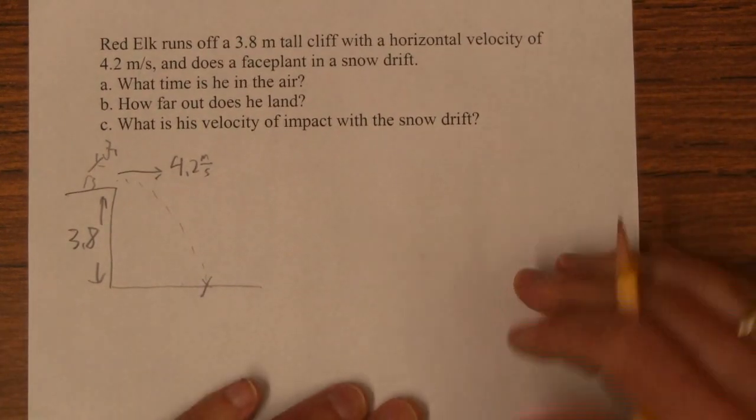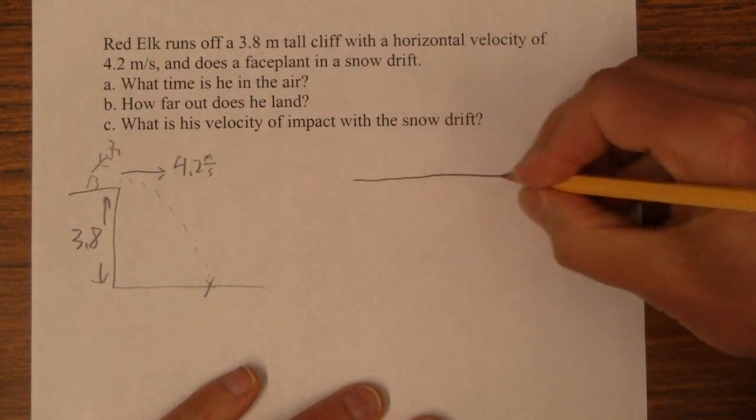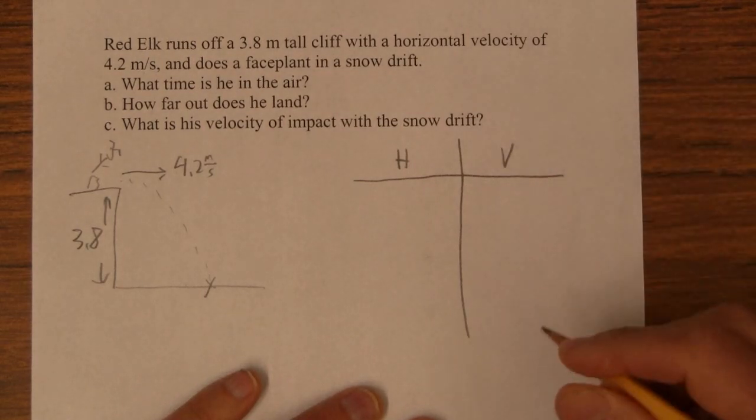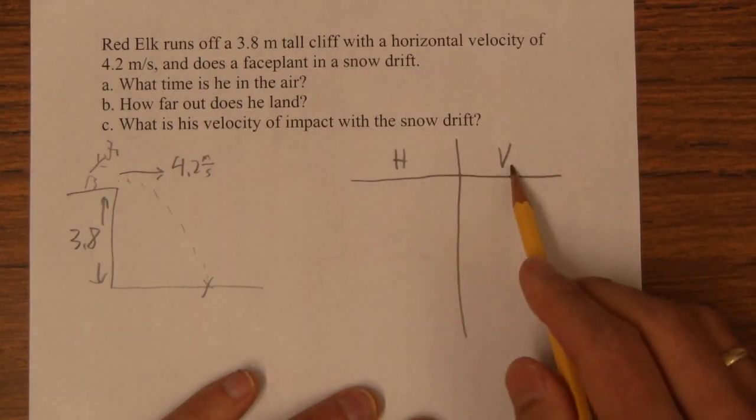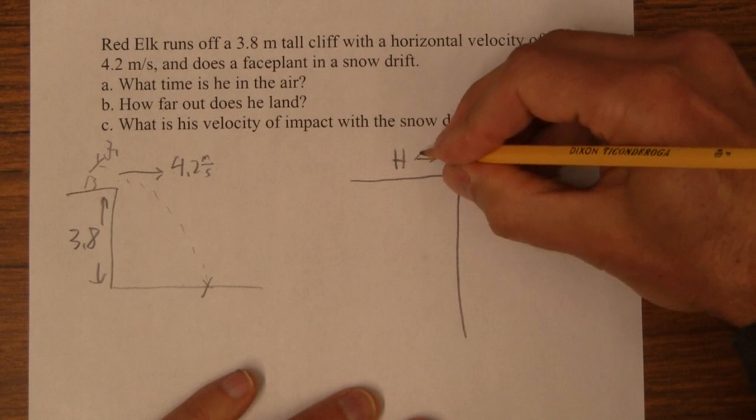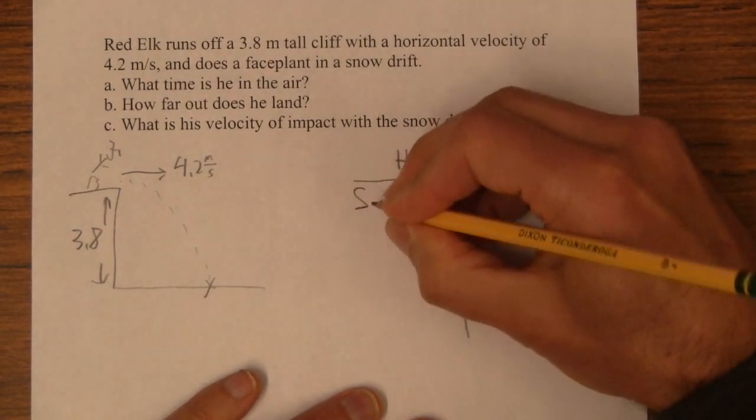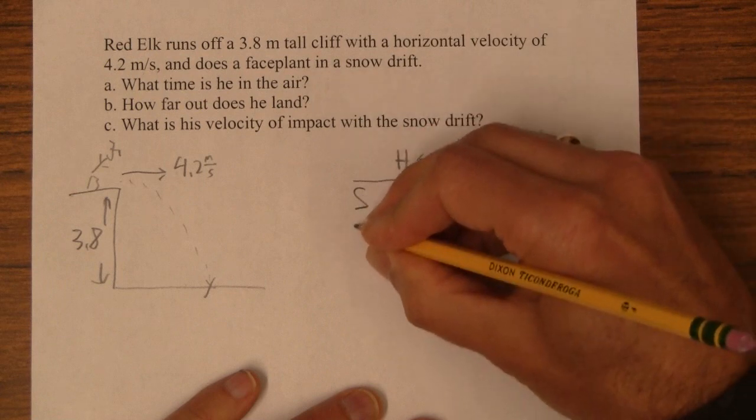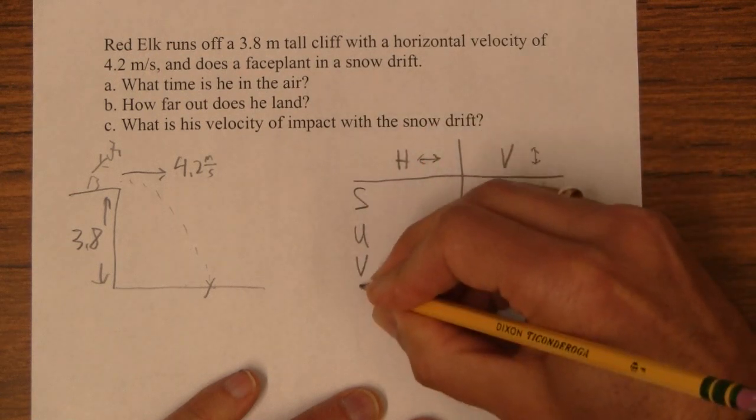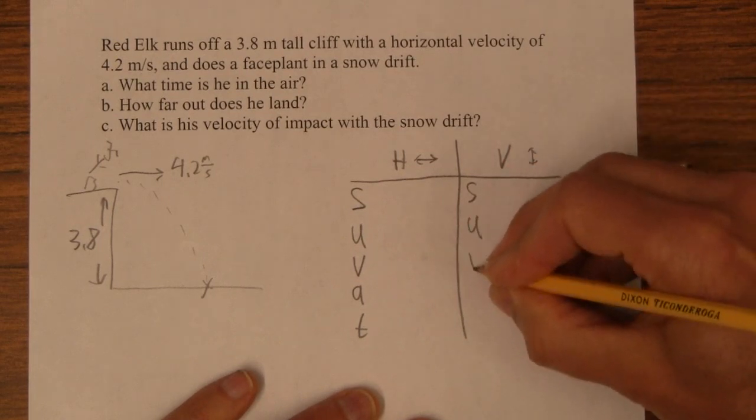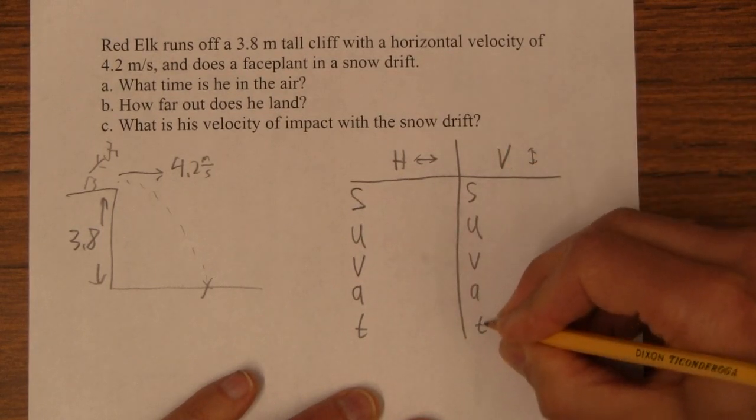Now, the cool thing is we can actually set this up. The way you solve these is you just solve two separate kinematics problems. There's a horizontal problem and a vertical problem. Horizontal is this way and then vertical is up and down. And we've got displacement, initial velocity, final velocity, acceleration, time. And we just do that in both directions.